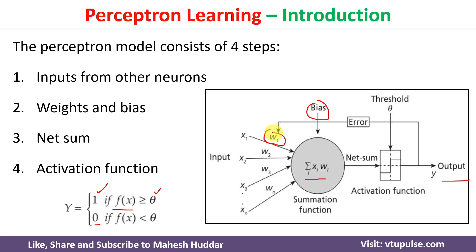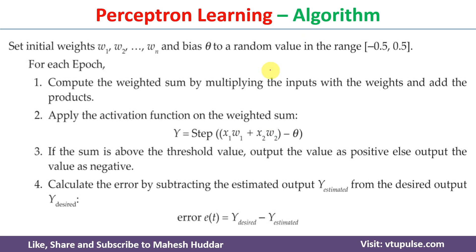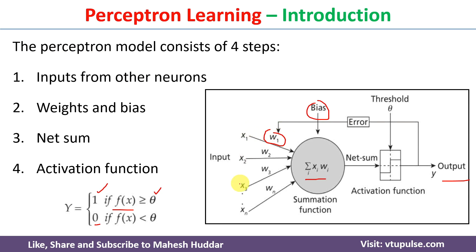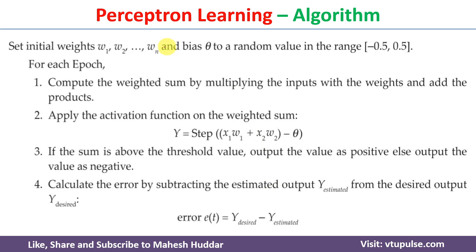Let us understand the perceptron learning algorithm step by step. First, we need to initialize all the weights — for each and every input there will be weights and a bias. We need to initialize these weights as well as the bias randomly, usually in the range of -0.5 to +0.5.